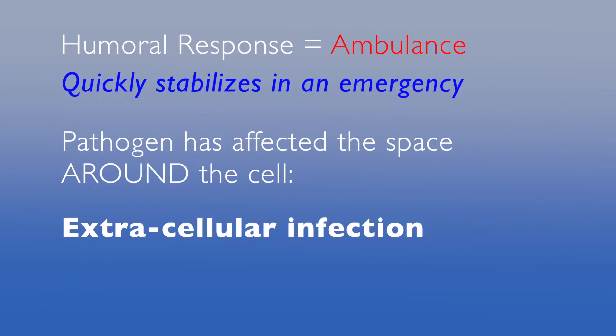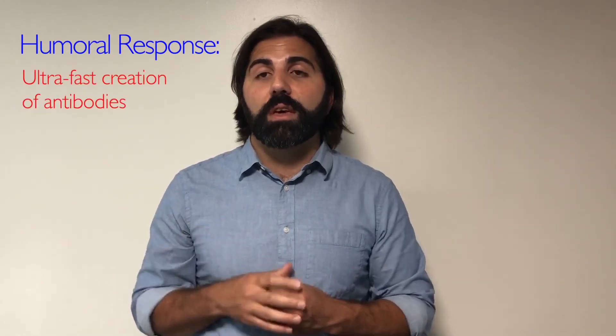White blood cells are constantly on the lookout for extracellular infections as well. When an extracellular infection is located, the white blood cells tell the body to quickly create antibodies — hence a humoral response, the ultra-fast creation of non-specific antibodies. When compared to the slower cell-mediated response, the humoral response produces massive spikes in non-specific antibodies at lightning speed. However, the humoral response doesn't create the long-lasting effect that the cell-mediated response does when it comes to antibody production.